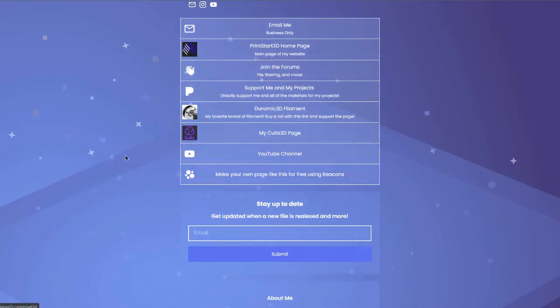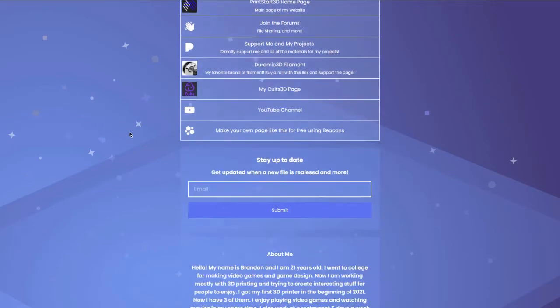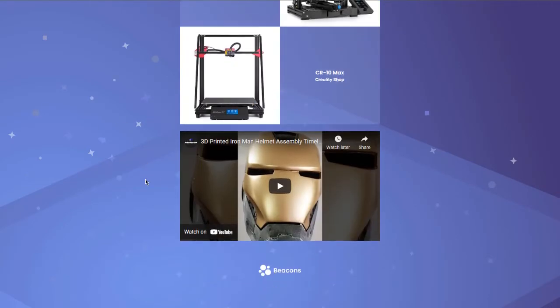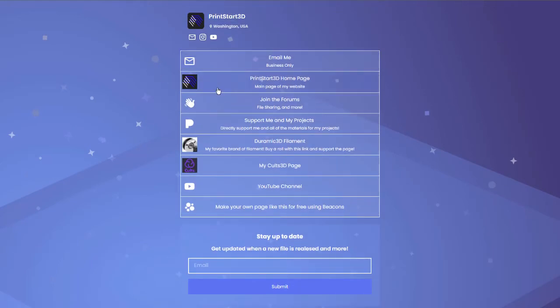You can also make your own Beacons page like this using my link for free. I don't pay for any of this here. It's pretty nice. I like it. There's also the Print Start homepage here. Don't be afraid to join the forums. It's pretty dead over there, but you've got to start somewhere. If you want to head over to the forums and share some files, some tutorials, some knowledge about 3D printers, then that is the place to do it.